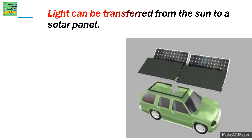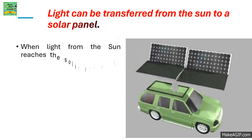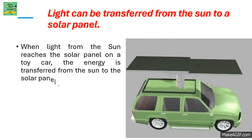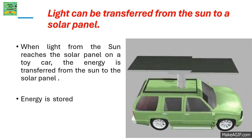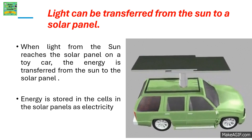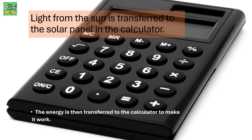Light can be transferred from the sun to a solar panel. When light from the sun reaches the solar panel on a toy car, the energy is transferred from the sun to the solar panel, and stored in the cells as electricity. Light from the sun is also transferred to the solar panel in a calculator, and the energy is then transferred to the calculator to make it work.